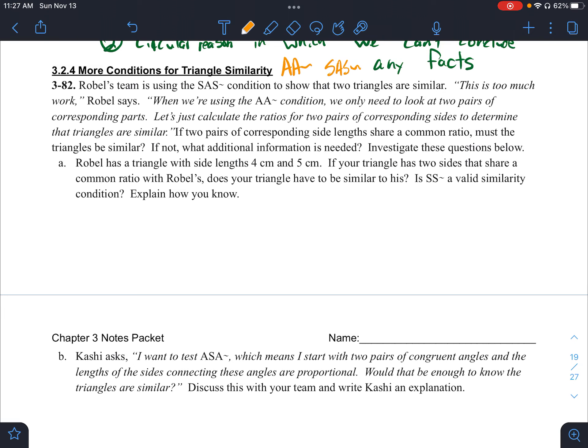So letter A says, Robel has a triangle with side lengths four and five. If your triangles have two sides that share a common ratio with Robel's, does your triangle have to be similar to this? Or is side side similarity a valid similarity condition?